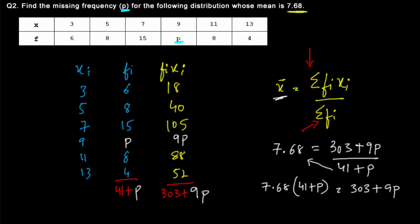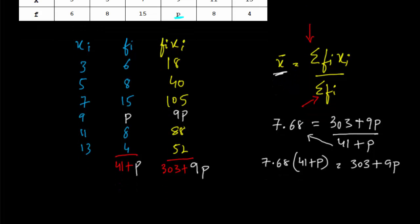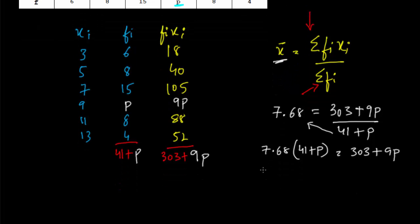So 7.68 multiplied by 41 equals 314.88 plus 7.68p and the right hand side is 303 plus 9p. Now we have to get the like terms to one side. That is we bring 9p to the left hand side and take 314.88 to the right hand side.